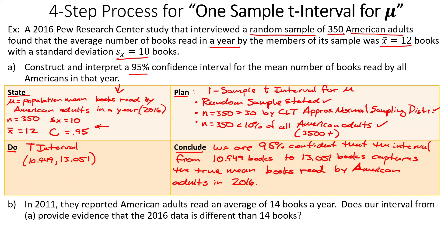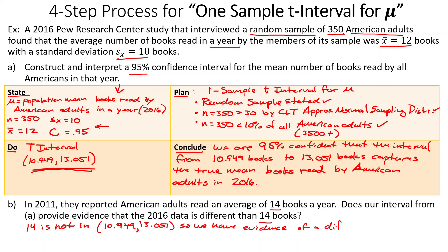A follow-up question: in 2011, American adults reported reading an average of 14 books per year. Does our interval from part (a) provide evidence that the 2016 data is different from 14 books? The question is simply: is 14 in our interval? No, it's not — 14 is not in the interval from 10.949 to 13.051. Therefore, we have evidence of a different mean number of books read, because 14 is not a plausible value. If it were 12.5 or even 13, those would still be plausible since they fall inside the interval.